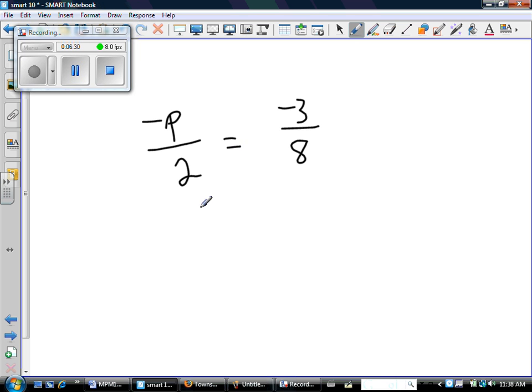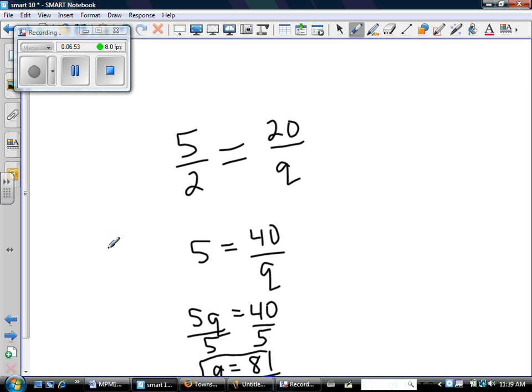So solve for p. I'm going to multiply both sides by 8. So negative 8p over 2 equals negative 3. This reduces to negative 4p. Divide everything by negative 4. And I get p = 3 over 4. So there's p.